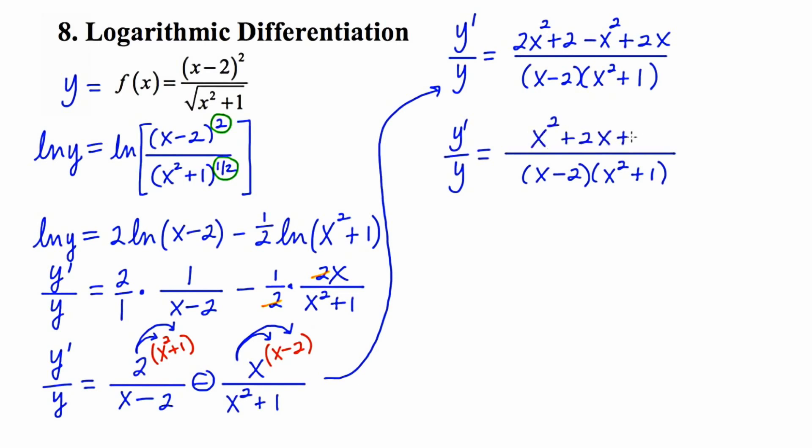And we end up getting x squared plus 2x plus 2. And it's going to be tempting to want to factor that, but the numerator cannot be factored. And my objective here is to find the derivative. I want to find y prime, which means I want to get it by itself. So my next maneuver is going to be to multiply both sides by y.